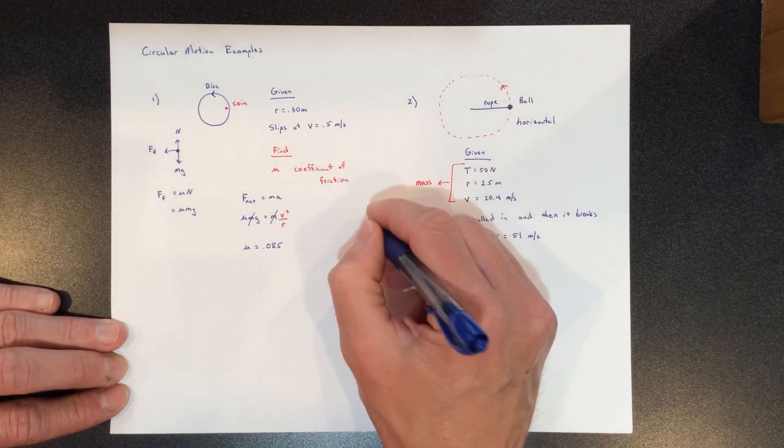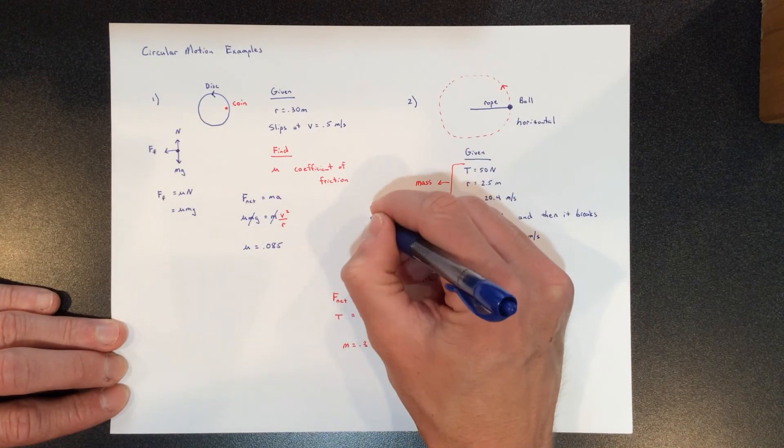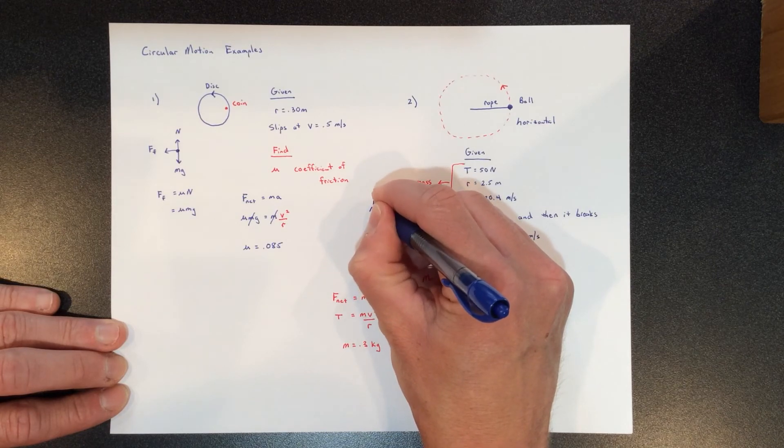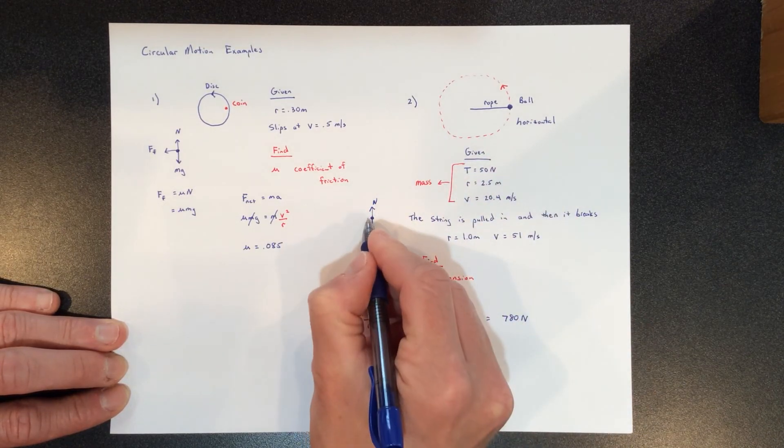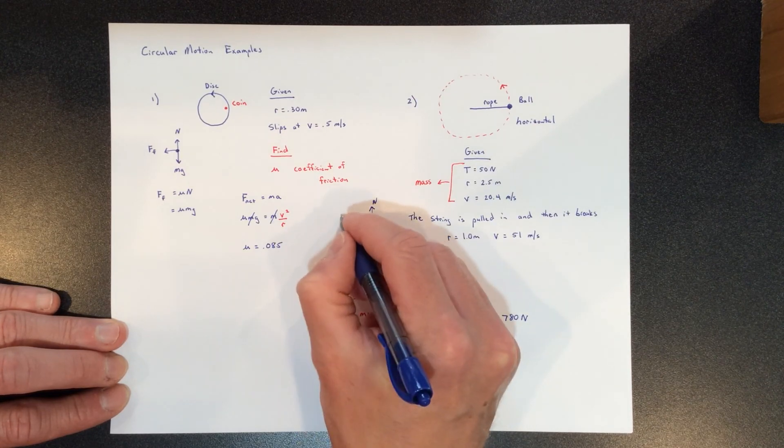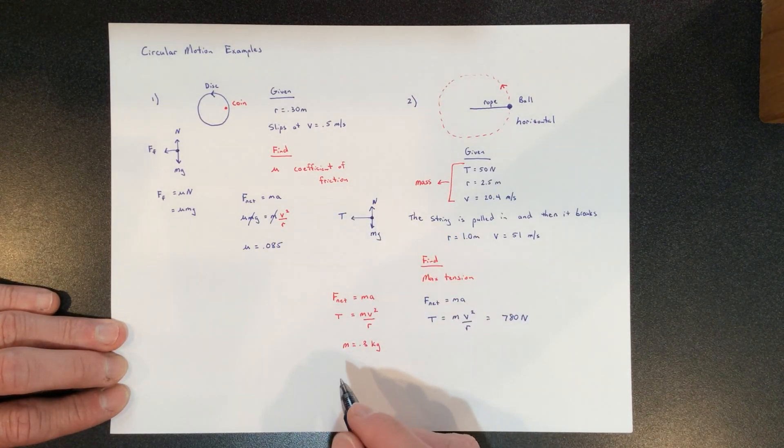We could have drawn a free body diagram for this one—it would have been the same thing. We had the normal force of the table up and mg down, and those were the same. Again, we have the rope pulling inward on this object.